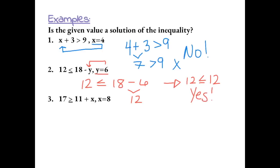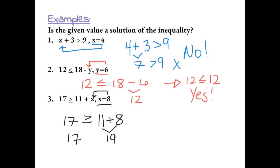Example 3: 17 is greater than or equal to 11 plus x, when x equals 8. Plugging in 8, we get 17 is greater than or equal to 11 plus 8. Simplifying the right side gives us 19, so we have 17 is greater than or equal to 19. Since 17 is not greater than or equal to 19, x equals 8 is not a solution to the inequality.